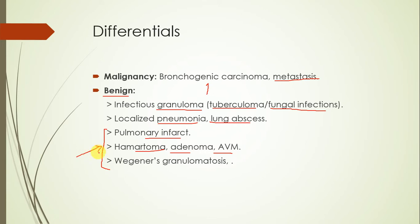Other differentials are hematoma, adenoma, and arteriovenous malformation, and I think those are the most likely differentials in this case because they are often asymptomatic. A hematoma is a disorganized mass of tissue, an adenoma is a benign tumor, and an arteriovenous malformation is a malformation that has both arterial and venous components.